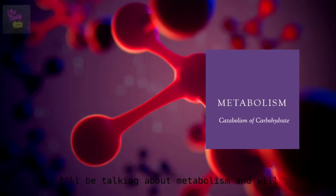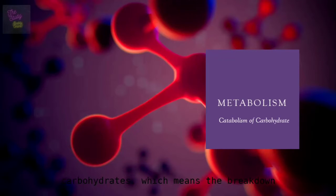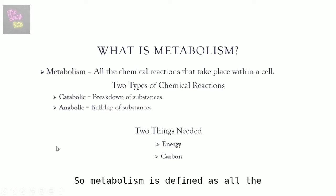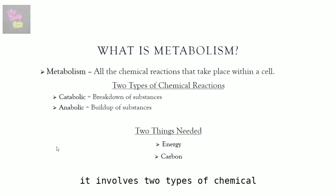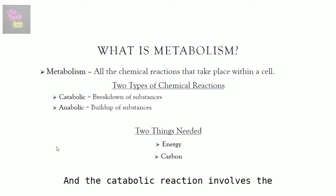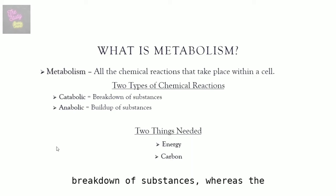In this video I'll be talking about metabolism, and will mainly focus on the catabolism of carbohydrates, which means the breakdown of carbohydrates. This process occurs during glycolysis as well as cellular respiration. Metabolism is defined as all the chemical reactions that take place within a cell. It involves two types of chemical reactions: catabolic reactions, which involve the breakdown of substances, and anabolic reactions, which involve the building of substances.